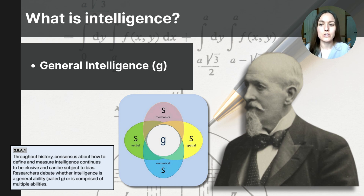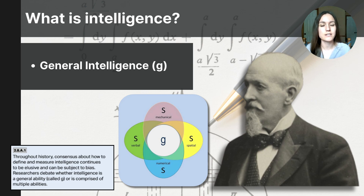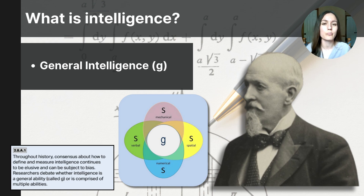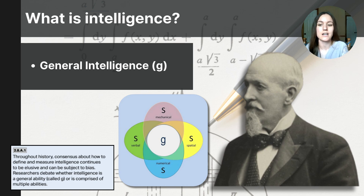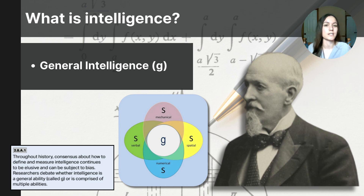Spearman's theory of general intelligence remains debated, but it's similar to how tests like the ACT provide an overall score based on different subtests. The key idea is that G is the underlying ability that predicts our performance in various tasks.